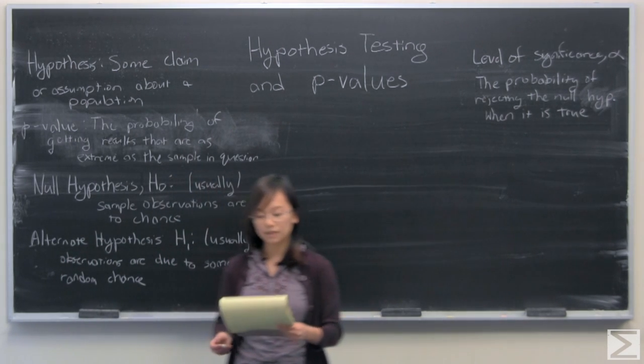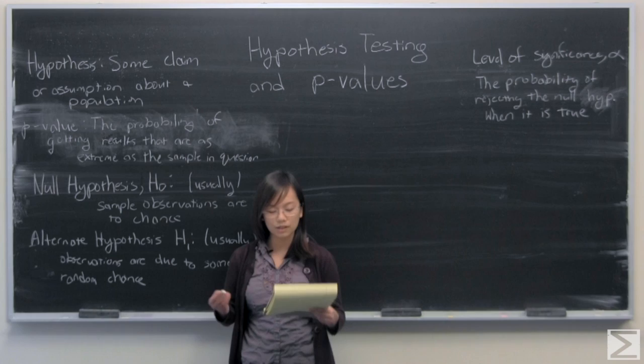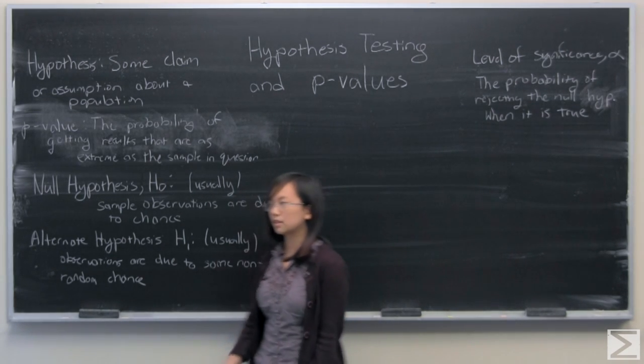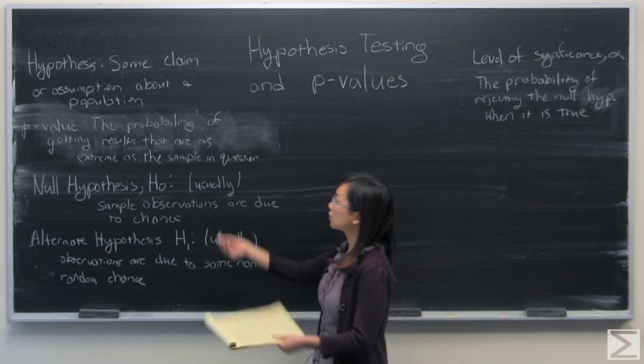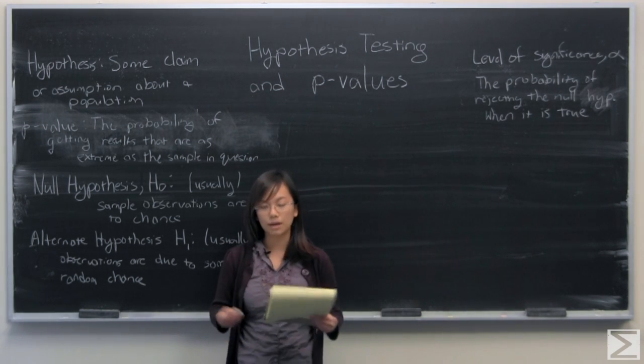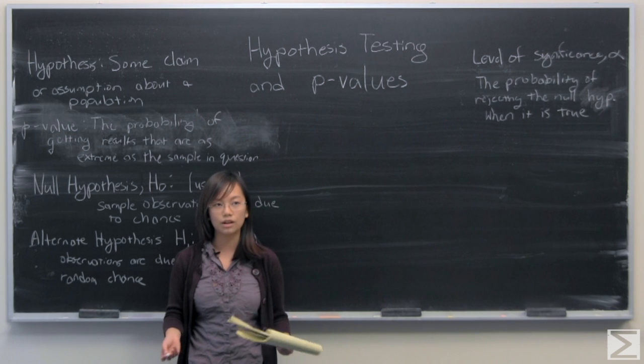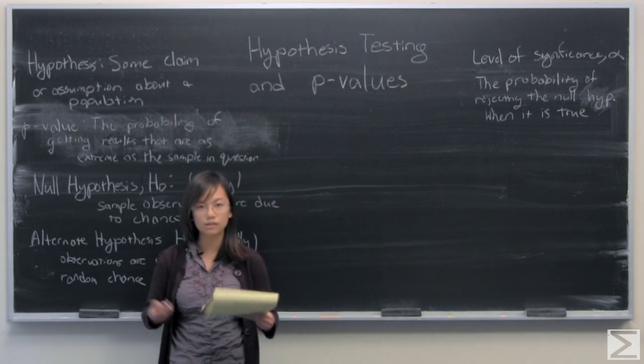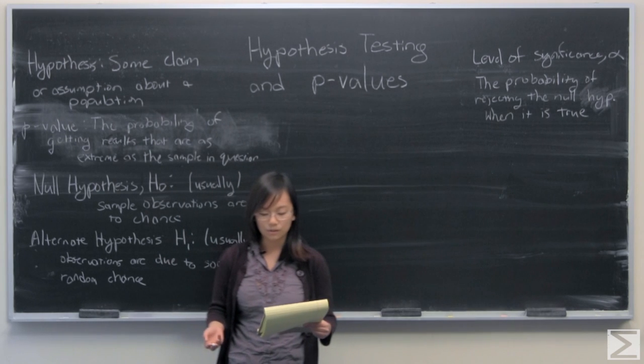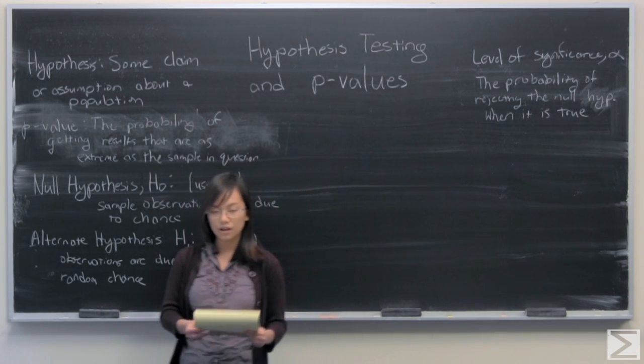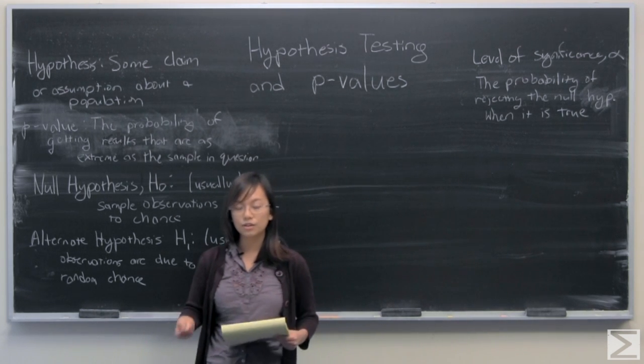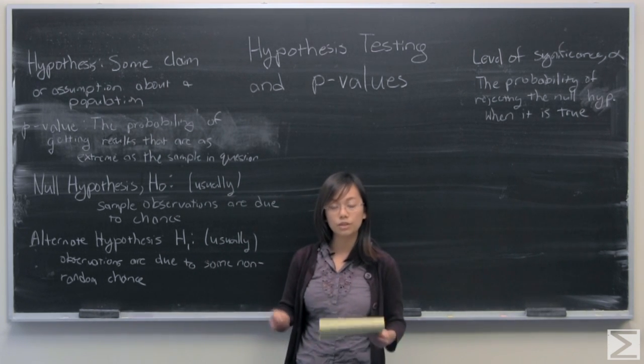Something that's very important in statistics is that you want to find out if your hypothesis or claim is true. In statistics, I've written down the typical hypothesis: some claim or assumption about a population. For example, the average temperature of this population of creatures' bodies is 98.6 degrees, or the average height of the student body is greater than 5 feet. So oftentimes we want to prove that these are true, and we can use statistics to do so.